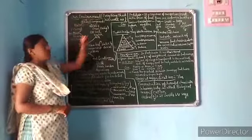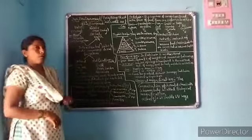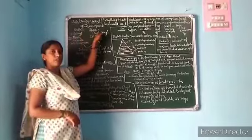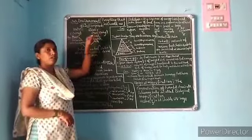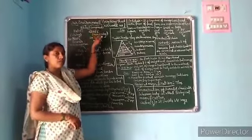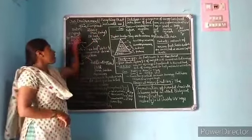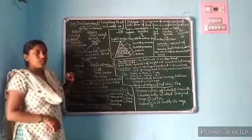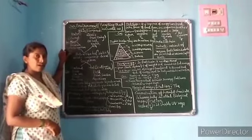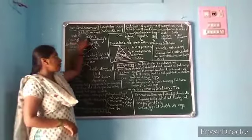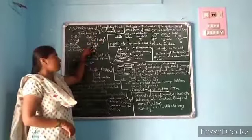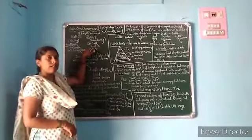In our environment there are two components: one is biotic and another one is abiotic. Biotic means living things; abiotic means non-living things. Biotic examples include plants, animals, and microorganisms. Abiotic means non-living things — examples: soil, water, air, and atmosphere.